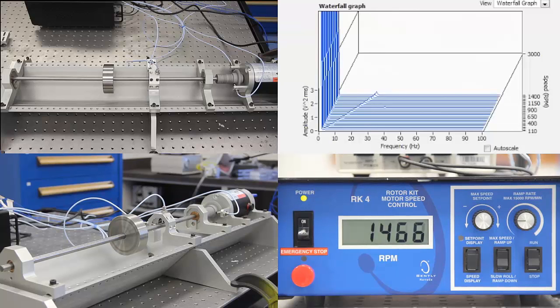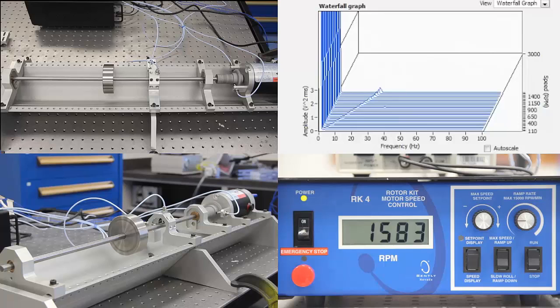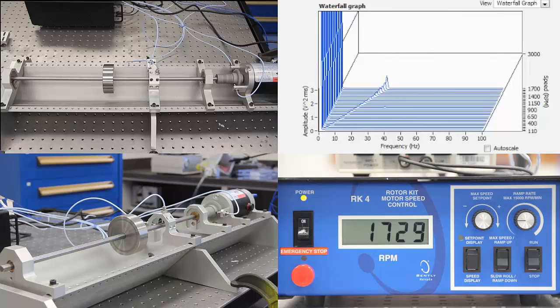The maximum amplitude is observed near 1900 RPM, which is the critical speed for the system. At this speed you will hear the large vibration produced by the system.